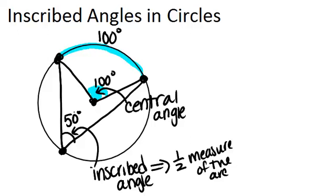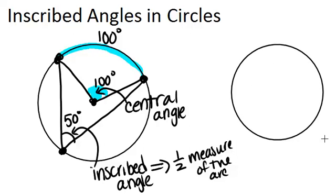Now, the cool thing about inscribed angles is if you have a circle and you pick two points on the circle to make your inscribed angle from, there are an infinite number of inscribed angles that you can draw from those two points.